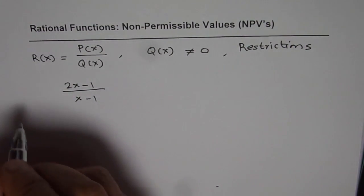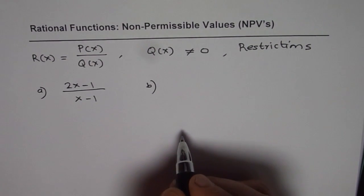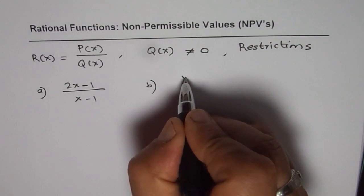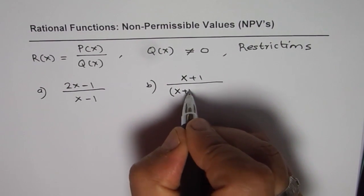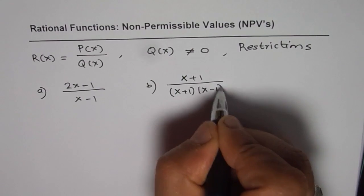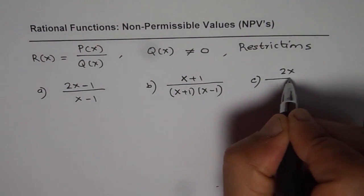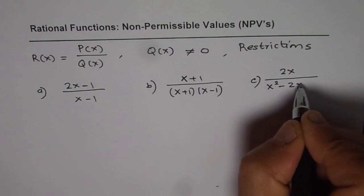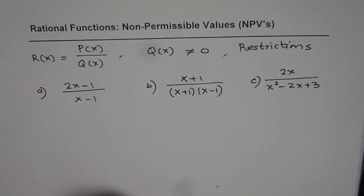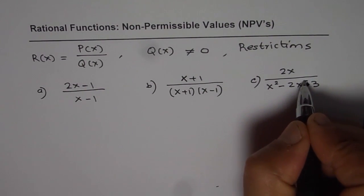So write down the restrictions, that is question A for you. For B, we could have a quadratic function here, x plus 1 divided by x plus 1 times x minus 1 in factored form. For C, I'm writing one function as 2x over, we can write a quadratic function like x squared minus 2x plus 3. Let me make this minus 3 for the time being, that will help us get the right answer easily.